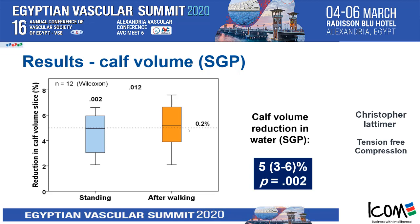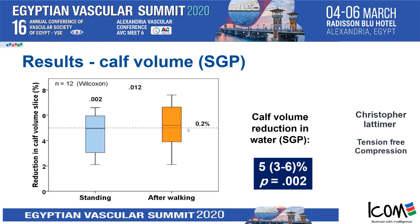But after walking and exercising and using your calf muscle pump, there was no significant reduction in volume. This tells us that in water, our venous reservoir has gone and the calf muscle pump becomes redundant — because there's nothing to pump. We concluded that water significantly reduces the diameters of veins, and this is the first step in exploring the tension-free properties of water compression.